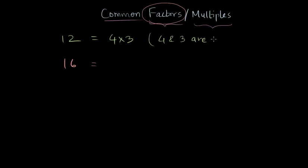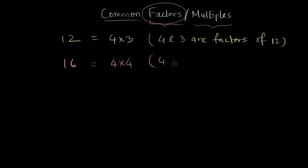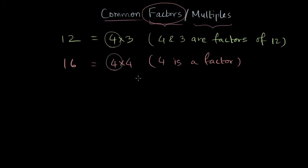So 4 and 3 are factors of 12, but are these the only factors? Probably not, because we can find many other ways of writing 12 as a multiplication of two numbers. Let's also find the factors of 16. We can write 16 as 4 times 4, so 4 is a factor of 16 as well. So we can definitely see that 12 has 4 as a factor and 16 has 4 as a factor — meaning 4 is a common factor of 12 and 16.